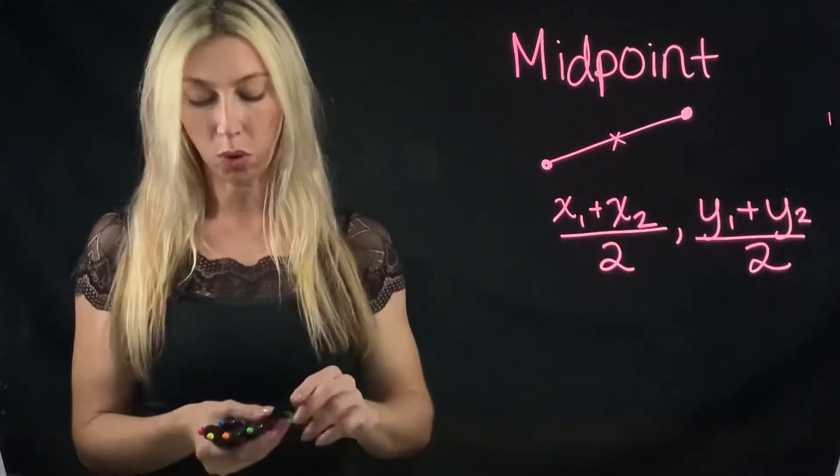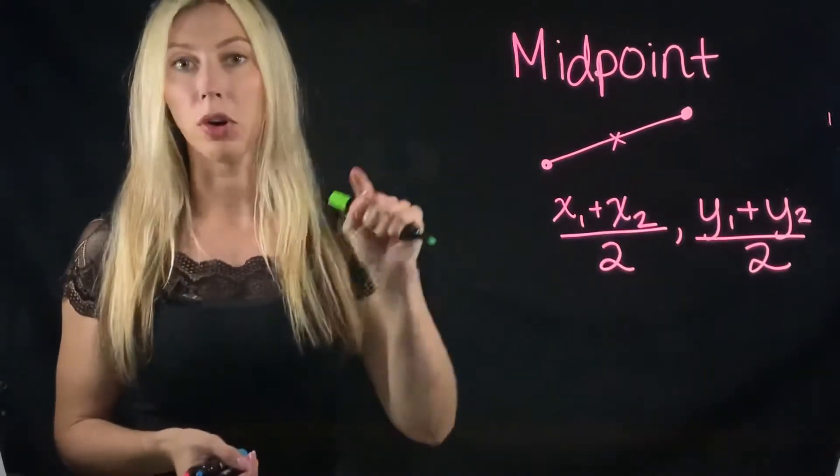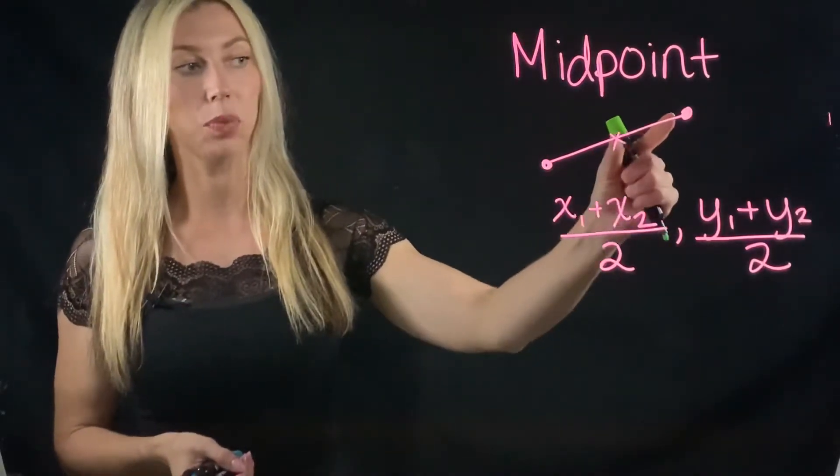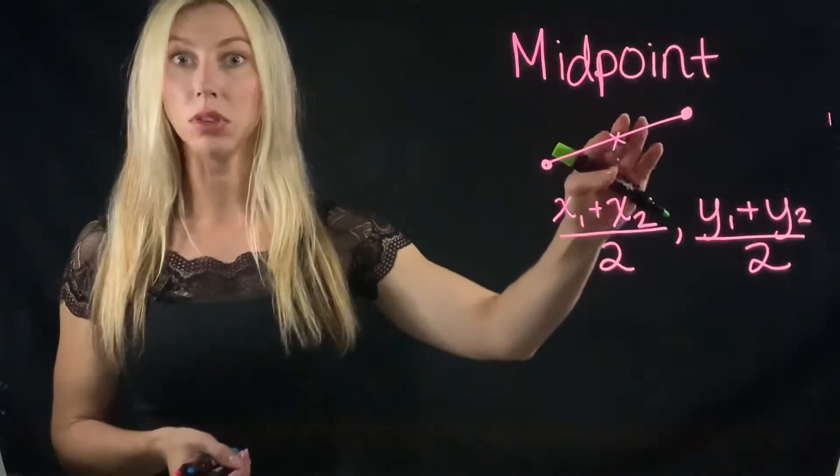Oftentimes, what we'll do in geometry is we'll use a marking system to show that the left side and the right side are equal to each other.